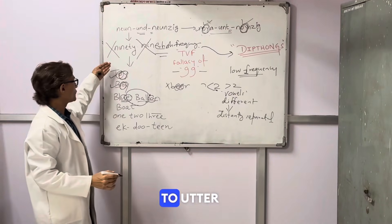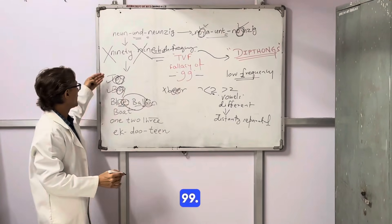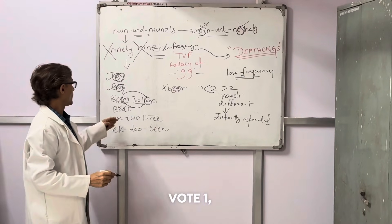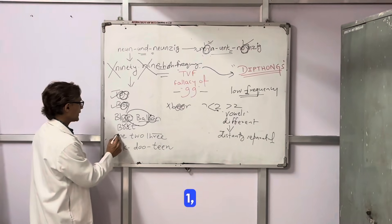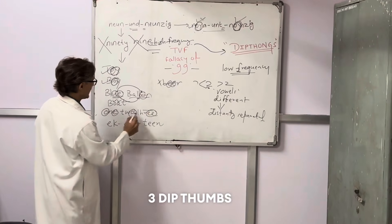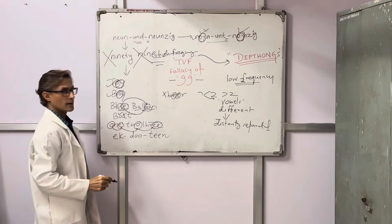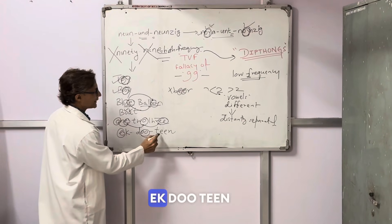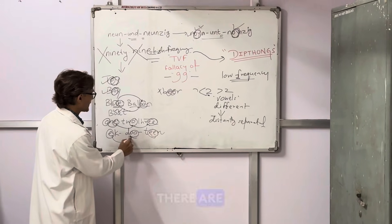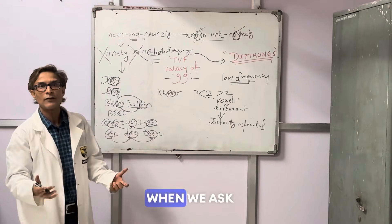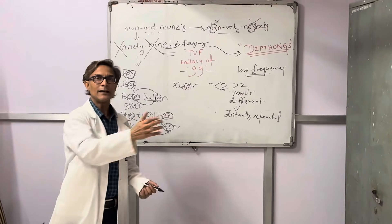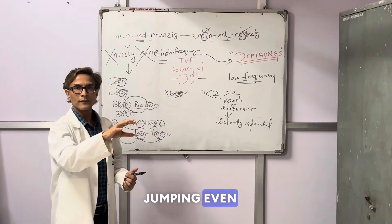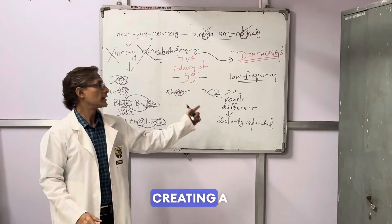Ideally we should ask the patient to utter terms like toy, boy, blue balloon, boat — words with two different vowels — rather than '99.' One, two, three also works as the vowels jump across the phrase. In the Indian scenario when asking in Hindi, we can say 'ek, do, teen' — the vowel pronunciations jump from one word to another. Even if not a classical diphthong, if the vowels are jumping, it creates a low frequency vibration.